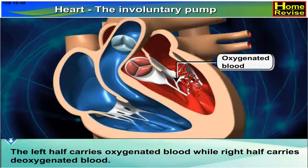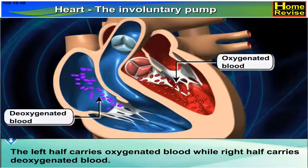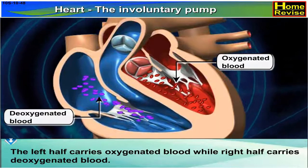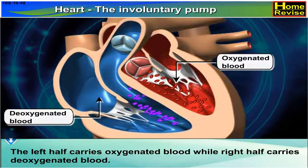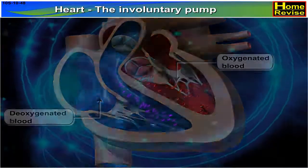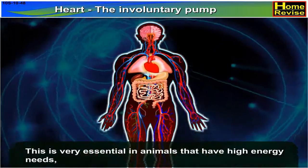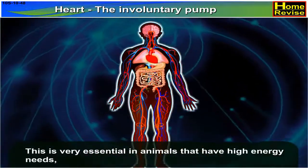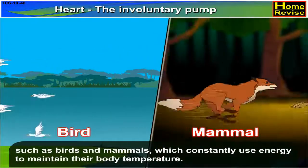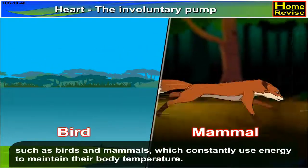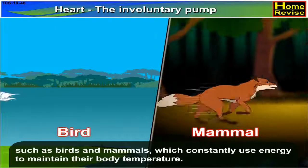The left half carries oxygenated blood, while the right half carries deoxygenated blood. This is very essential in animals that have high energy needs, such as birds and mammals, which constantly use energy to maintain their body temperature.